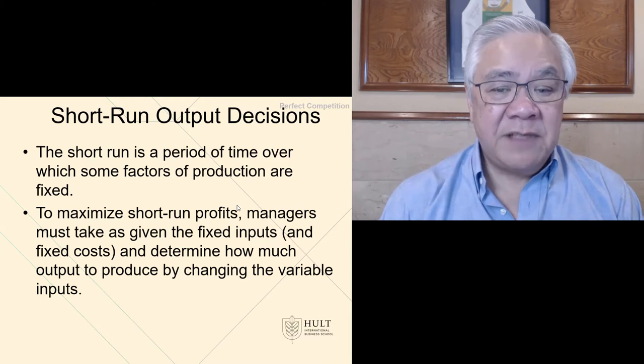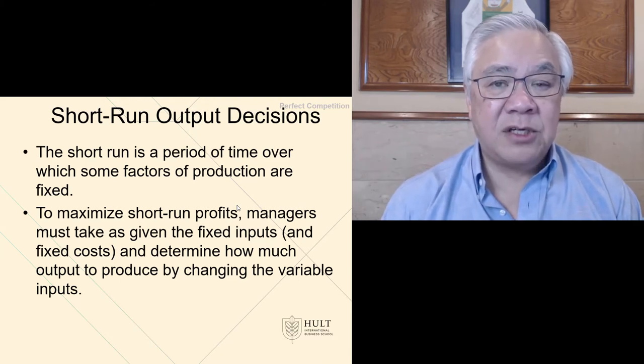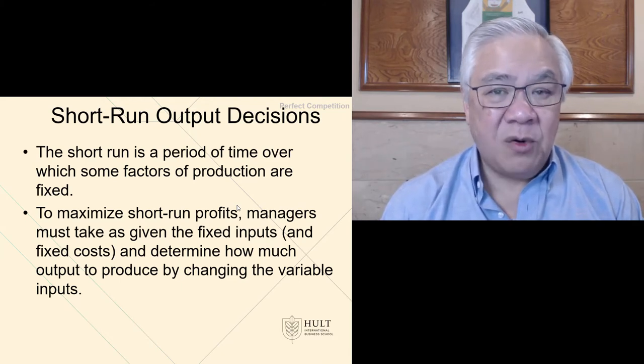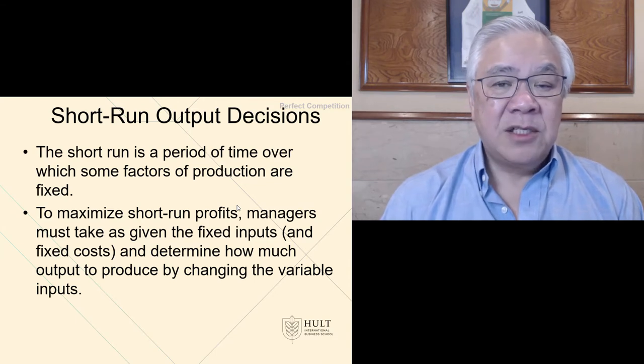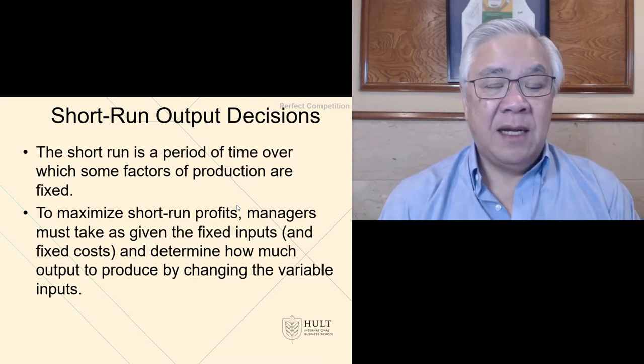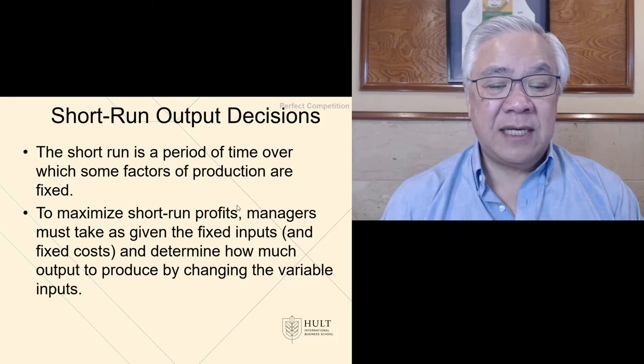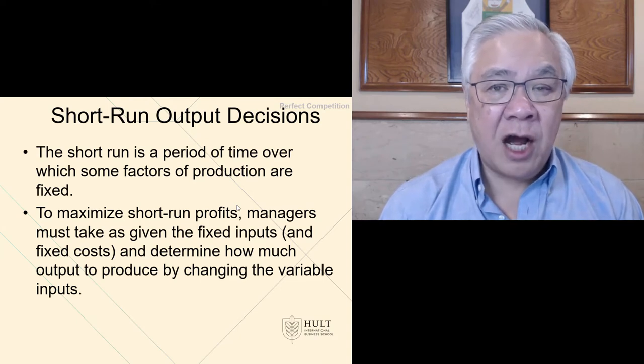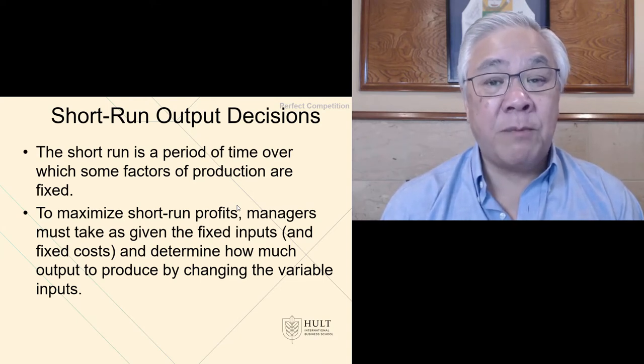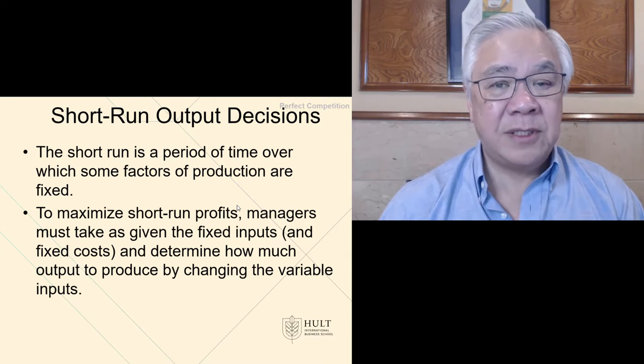The short run is a period of time over which some factors of production are fixed, such as rent or equipment. To maximize the short-term profits, then, we look at the fixed cost as a given, and then we look at our cost in terms of variable or marginal cost to make our output decisions.